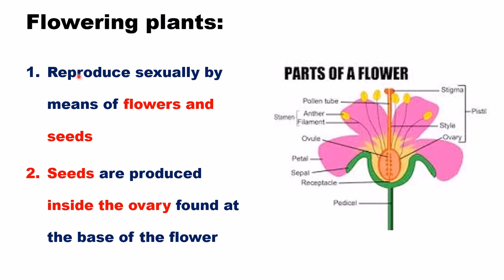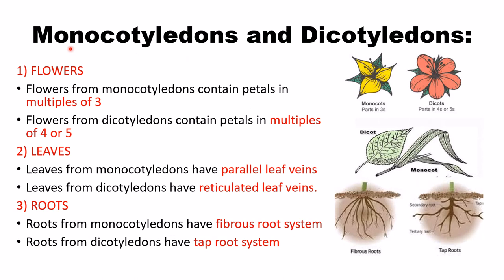Flowering plants reproduce sexually by means of flowers and seeds. Seeds are produced inside the ovary found at the base of the flower. Comparing monocotyledon and dicotyledon: monocot flowers have petals in multiples of three, while dicot flowers have petals in multiples of four or five — you can see five petals here in the dicot.